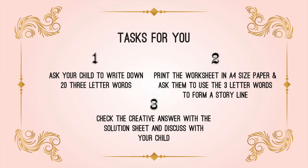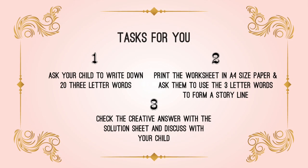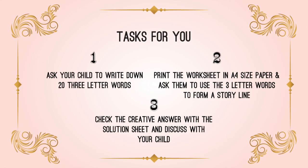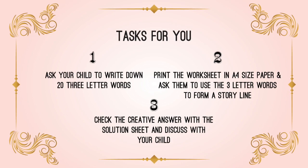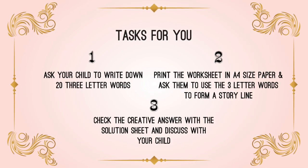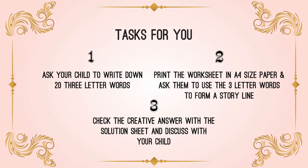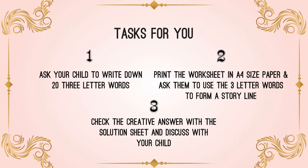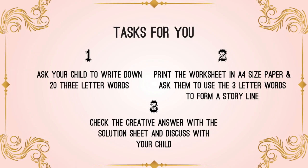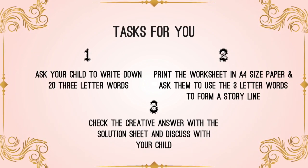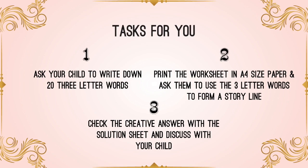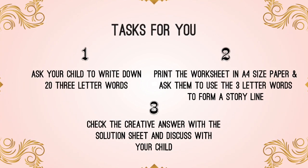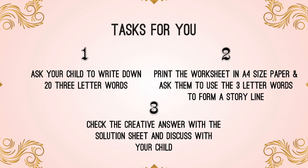Task for you: ask your child to take a sheet of paper and write down 3-letter words they could think of. Help here and there to get their thought process going. Now replace the angles with these 3-letter words in such a way that it makes up a storyline. After writing the creative storyline, ask them to solve the problem. Please share the creative storylines your child came up with in the comment section below to inspire other kids and their journey as well.